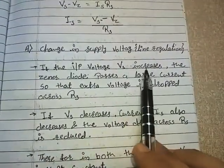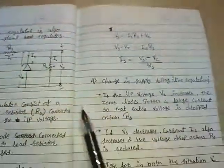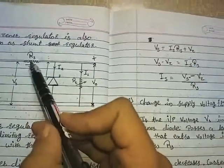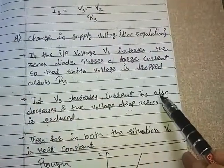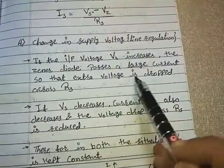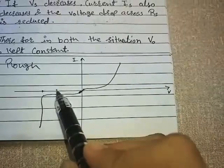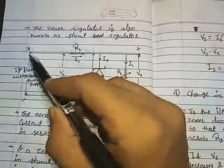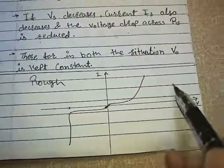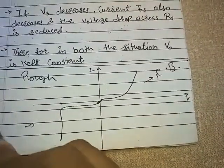If the input voltage VS increases, the voltage drop across RS also increases. When VS increases, the zener diode passes a large current so that the extra voltage is dropped across RS. From the VI characteristics of the zener diode — since it is connected in reverse bias — this is the VI characteristics showing forward bias and reverse bias regions.